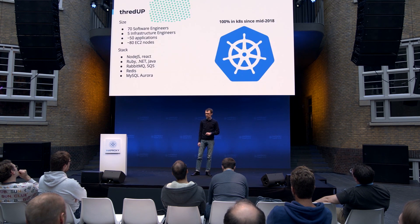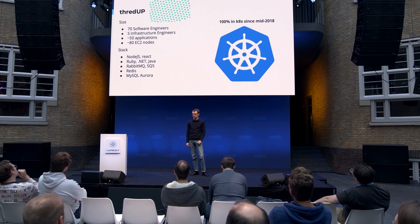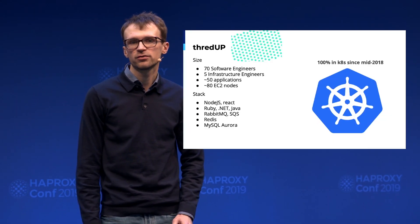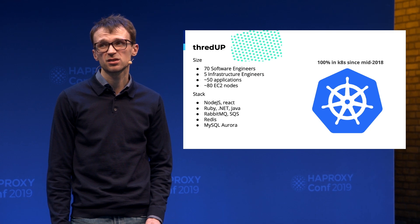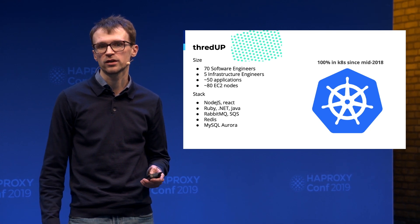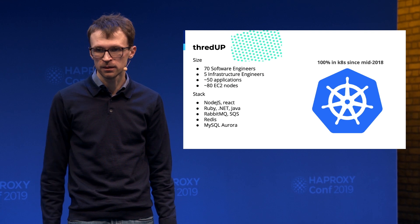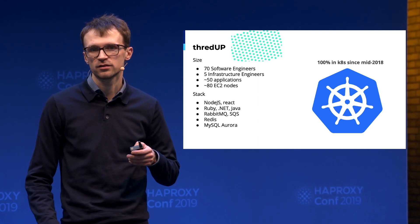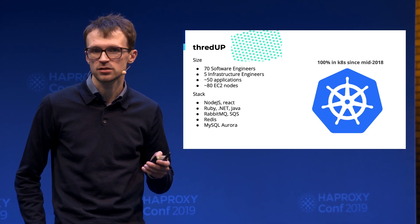In terms of our engineering team, ThredUp is not so big. We have about 70 software engineers. We run about 50 microservices applications on around 100 EC2 nodes in AWS. We use Ruby, Node.js, and Python, and we are exploring more programming languages like Java and so on.